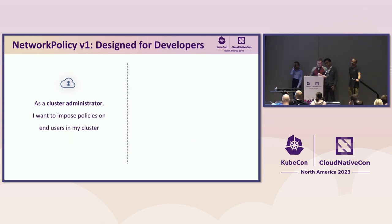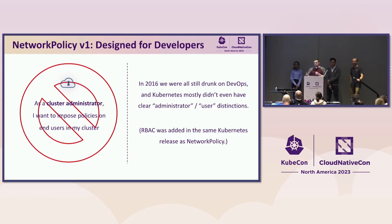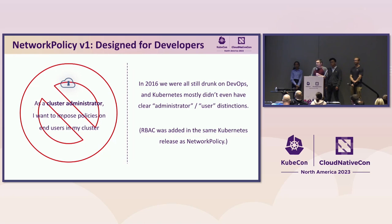One thing that is not a use case for Network Policy is: as a cluster administrator, I want to impose my policies on end-users in my cluster. This was designed in 2016. At the time, most Kubernetes clusters, people were scaling up from running Docker. You had a DevOps model where it's just one person deploying their cluster. The administrators and the users were really the same thing. RBAC was actually added in the same Kubernetes release as Network Policy. But that meant when we were designing Network Policy, RBAC didn't exist — there really wasn't a strong concept of administrators versus users in a Kubernetes cluster. So we couldn't really design Network Policy to differentiate administrators and users or provide use cases for administrators specifically.